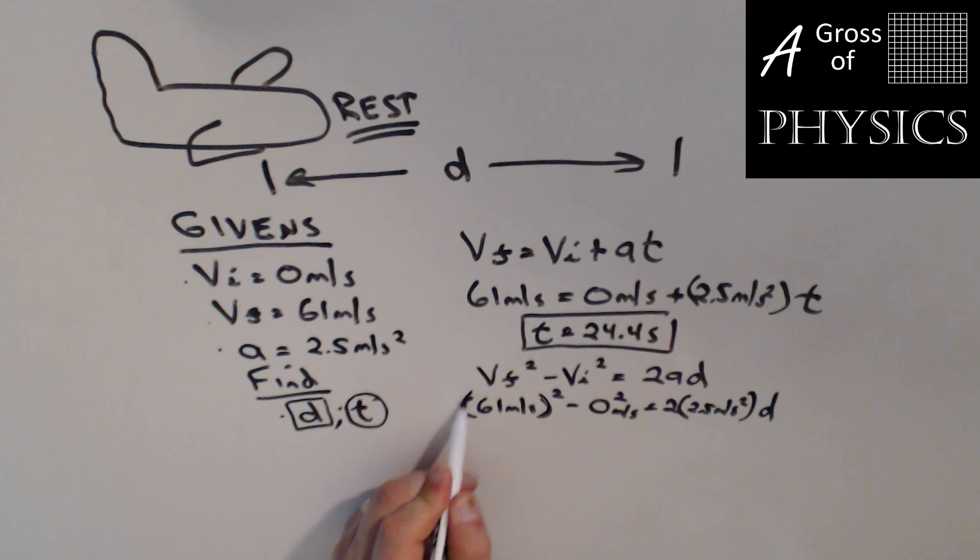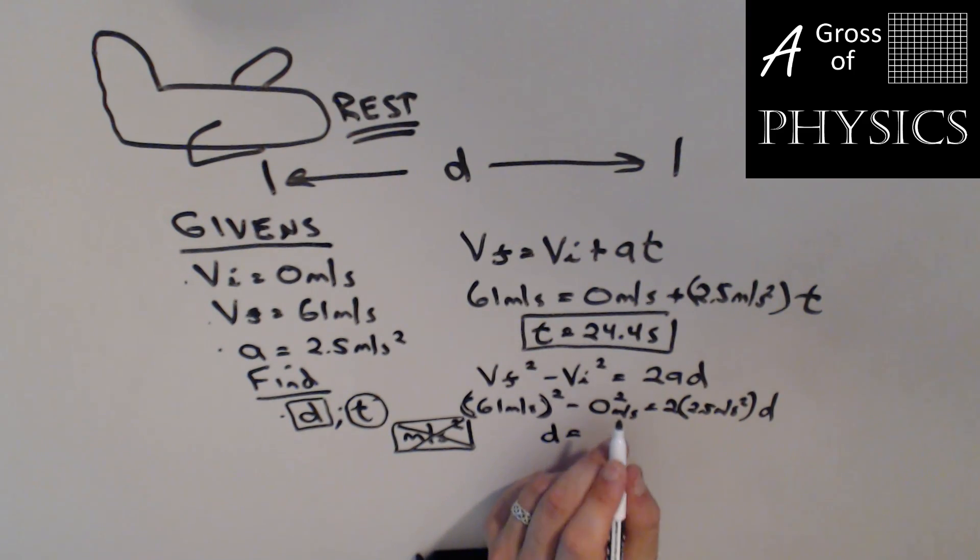You'll notice I put the parentheses around the 61. The reason I do that is because when I have the meters per second, if I put a square next to it, that's going to look like an acceleration. So I'm going to avoid that by putting parentheses around the variable. So in order to solve this, 61 squared in the calculator, I'm going to hit equal. And then I'm going to divide by parentheses 2 times 2.5. I know most of us can do 2 times 2.5 in our head, but in this case I'm going to plug in all the numbers. I'm going to hit divide, and I get 744.2 meters.